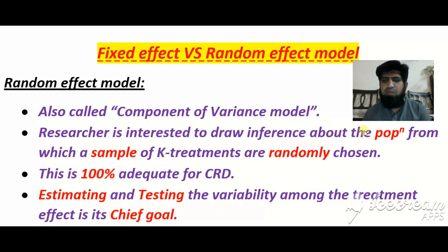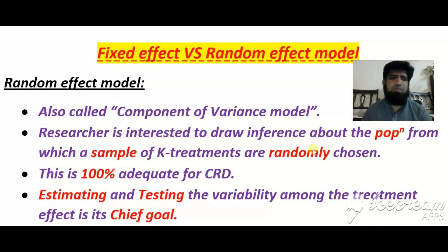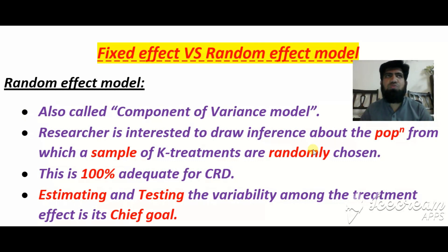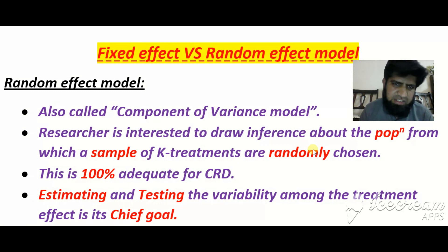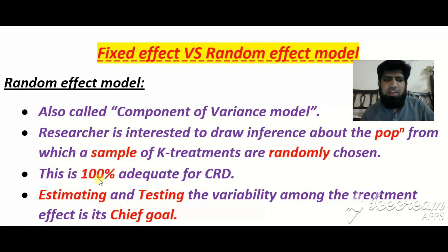From which a sample of k treatments are randomly chosen — یہ key point ہے جو fixed effect model اور random effect model کے درمیان فرق کرتا ہے۔ جب آپ ایک population سے randomly کچھ treatments select کرتے ہیں اور اس کی بنیاد پر population کے لیے inference draw کریں، تو یہ random effect model ہے۔ Fixed effect model میں ہم اس کے برعکس چلتے ہیں۔